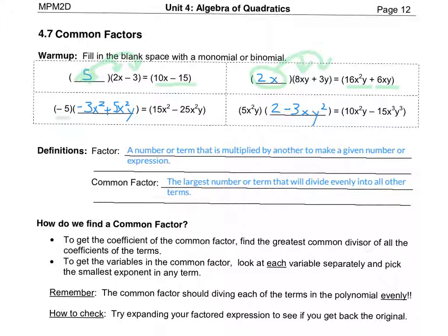For the third one, when we multiply by negative 5 we would need the expression minus 3x² plus 5x²y to get the given expression. What we need to multiply 5x²y by would be 2 take away 3xy². Hopefully your answers match mine — let me know if something seems really off.